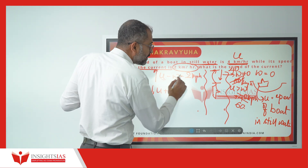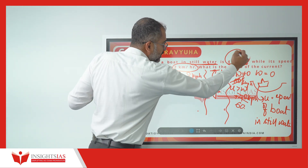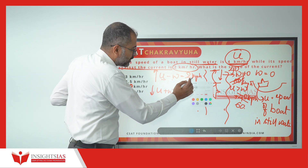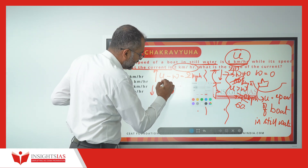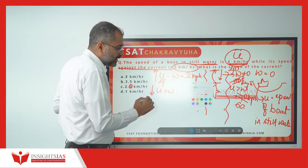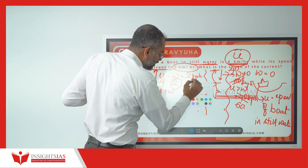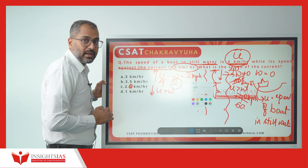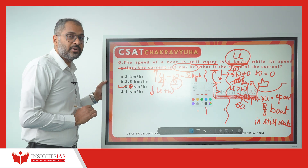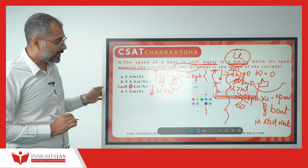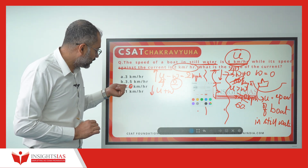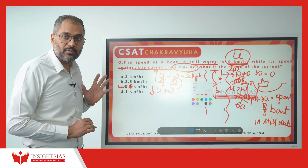Where U is 4 km per hour and U minus W is 2 km per hour — if I put U as 4, then W has to be 2 to make it 2 km per hour. So the answer is 2 km per hour. This is not 2.5; this is 2 km per hour.